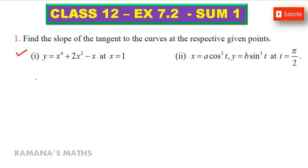Now dy by dx, which is m, the slope. The derivative is 4x cube plus 4x minus 1.